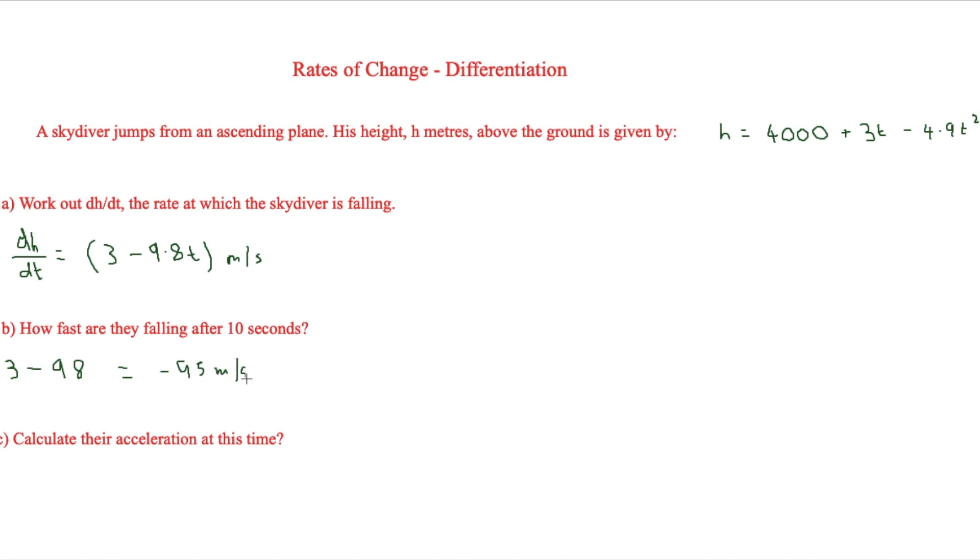And it's good that it's a minus because that shows that they are falling. If we ended up with a positive result, it would show that they were going up. So that means that they are falling at 95 meters per second.